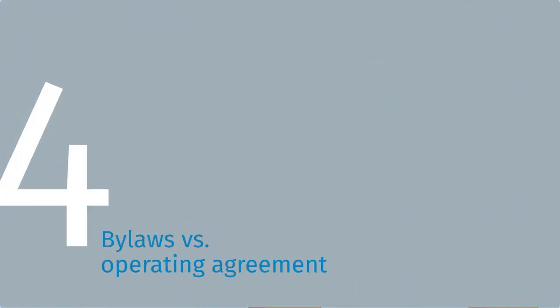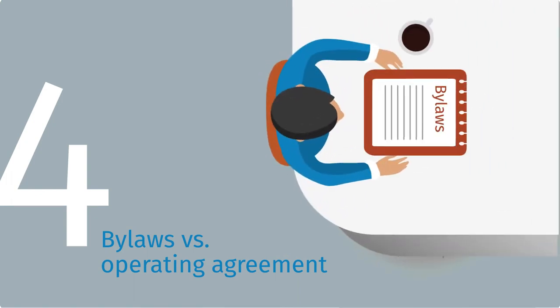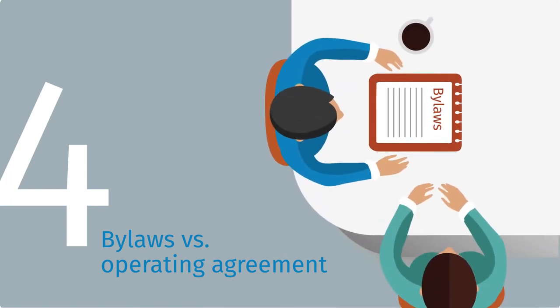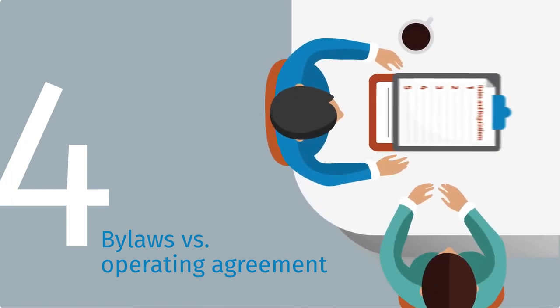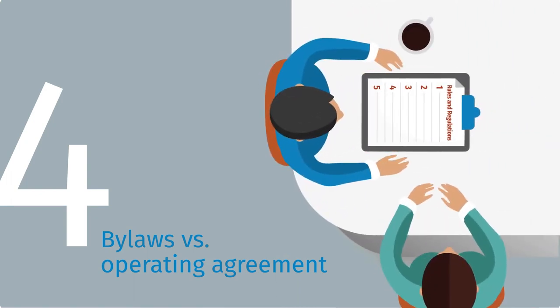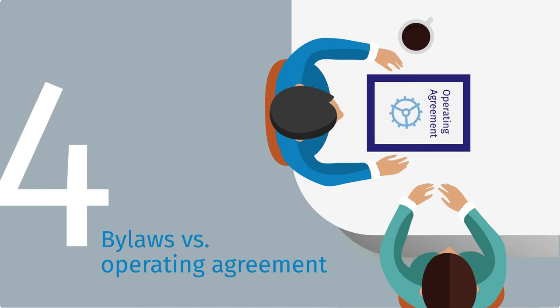Four: bylaws are a corporation's rules and regulations. In an LLC, the operating agreement establishes how the LLC conducts business.